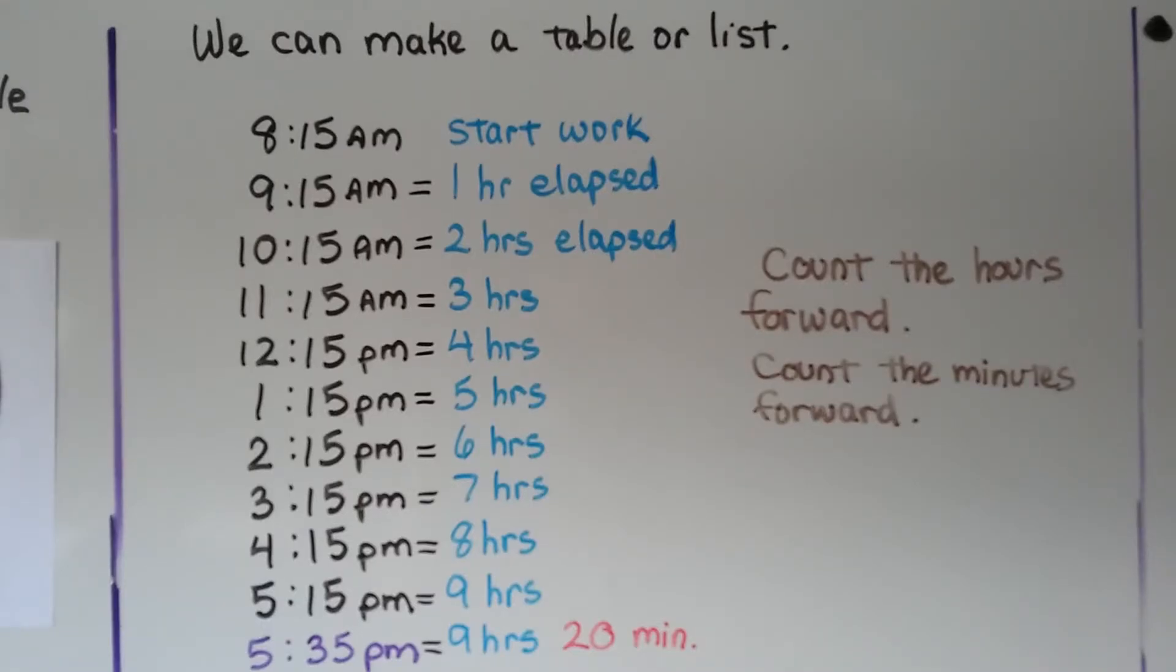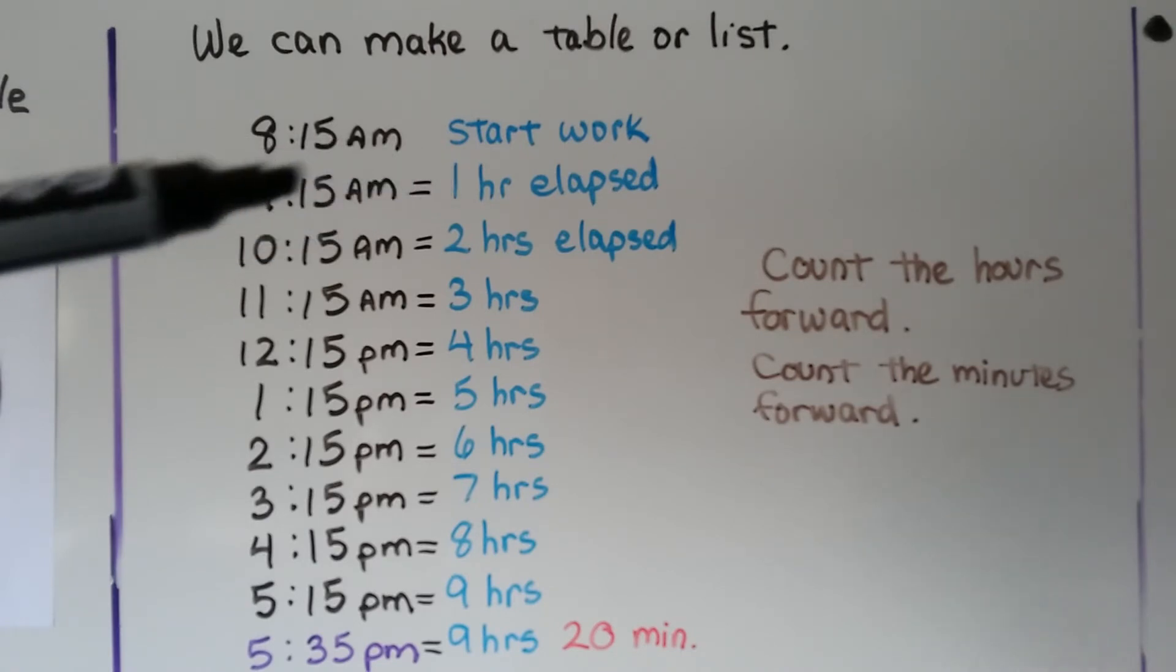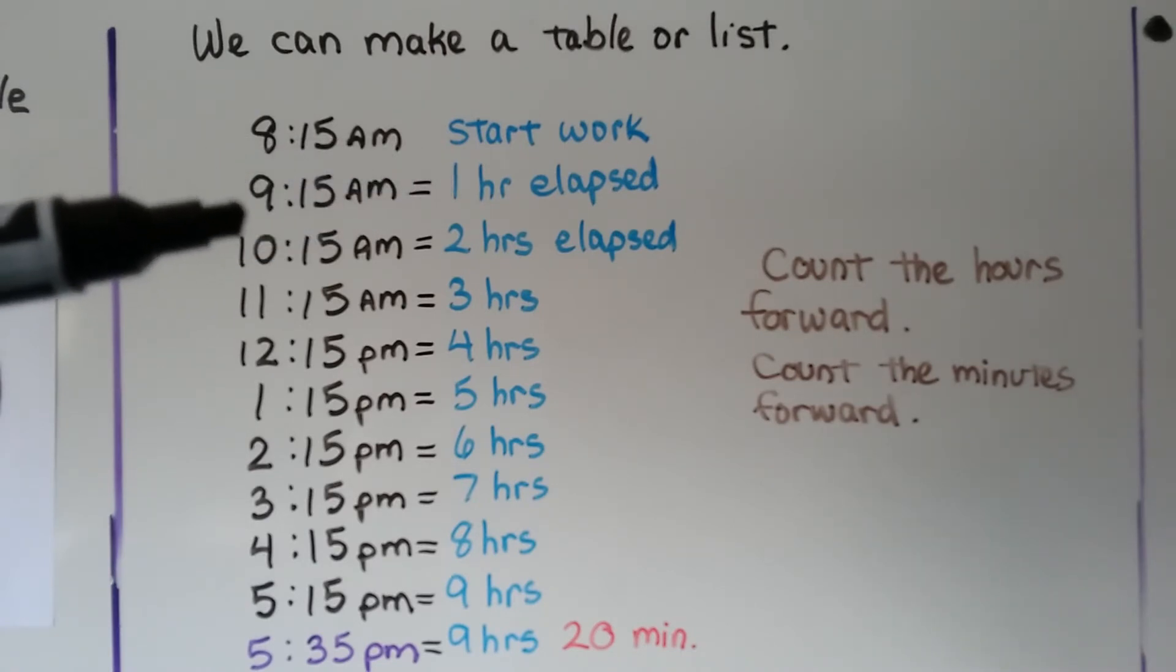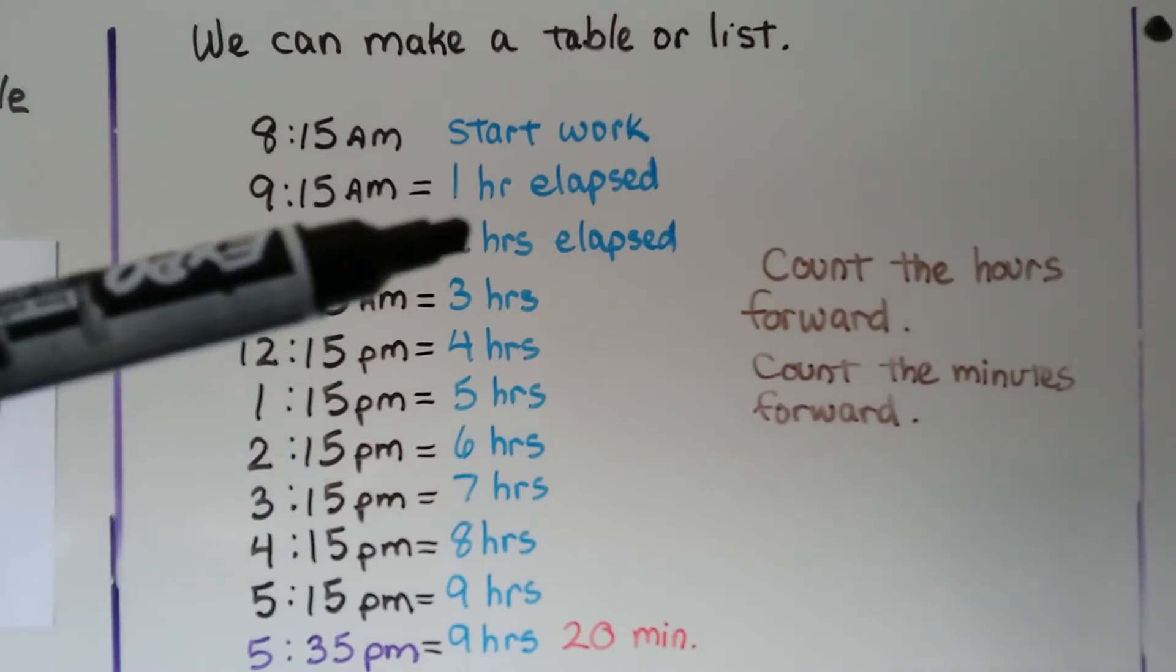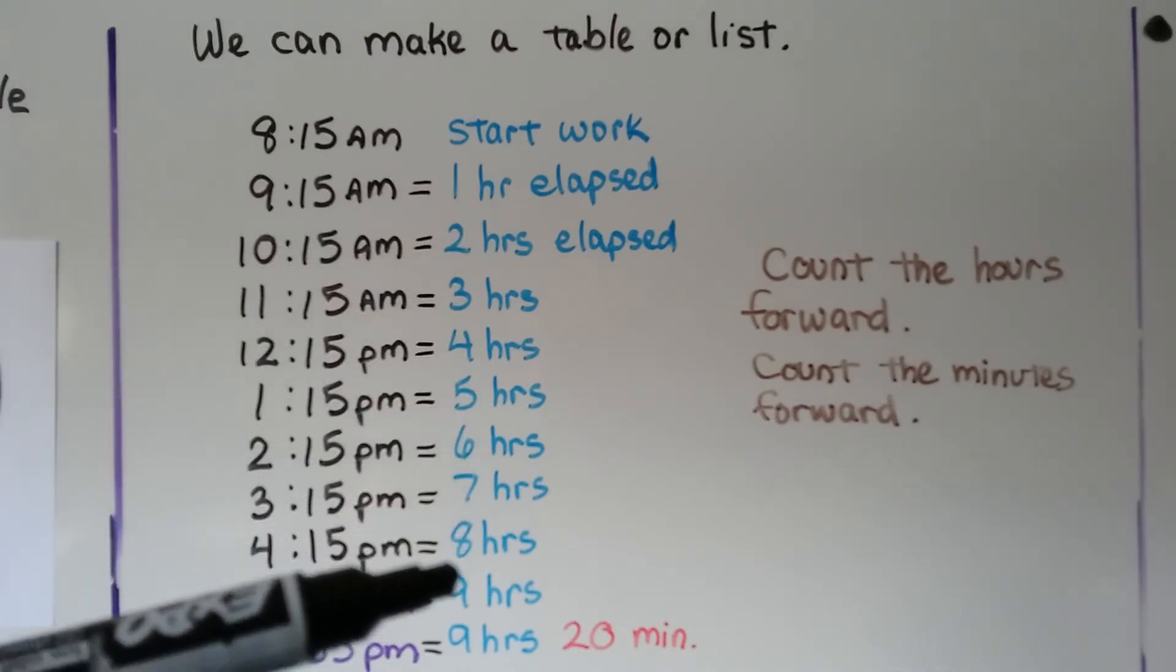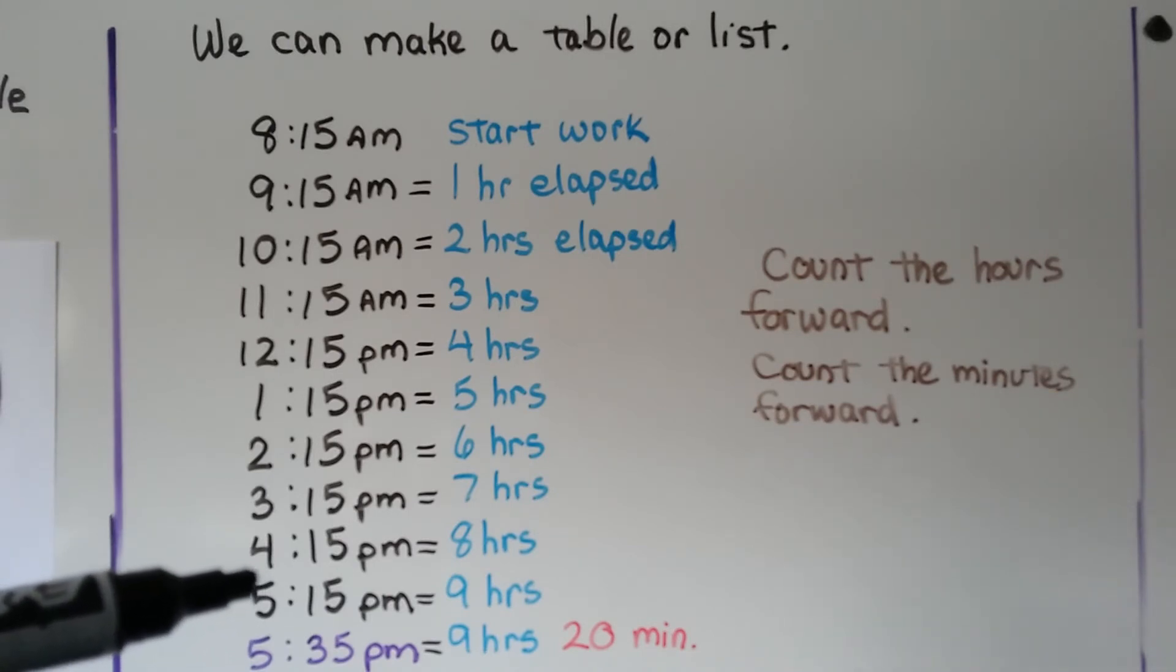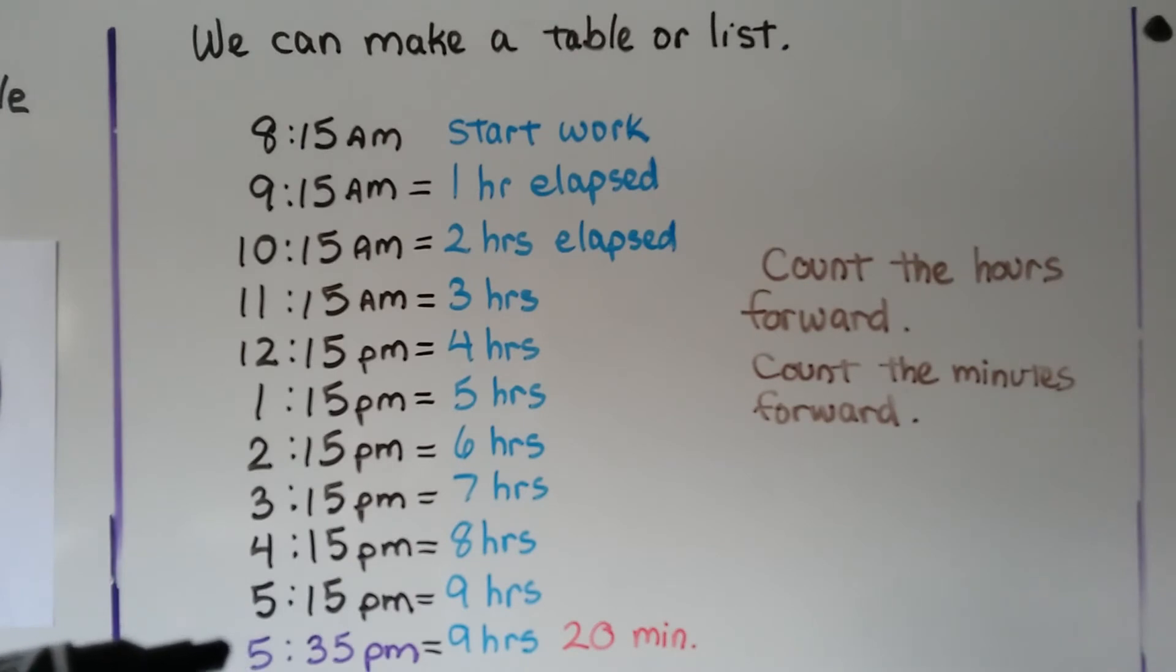We could also solve this by making a table or a list. She starts at 8:15 a.m. At 9:15 a.m. one hour has elapsed. And we count to 10:15, 11:15, all the way down counting how many hours have elapsed, counting forward. We can get to 5:15 which is 9 hours. When we get to 5:35 p.m. the difference between these minutes is 20 minutes. We have 9 hours and 20 minutes.